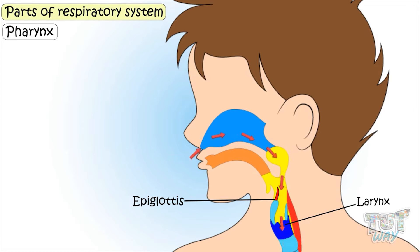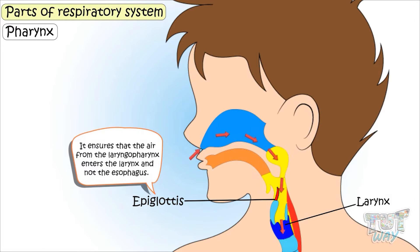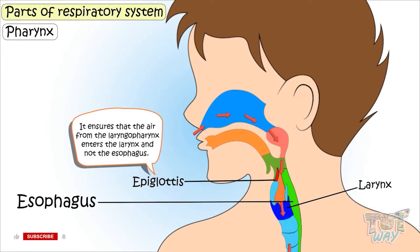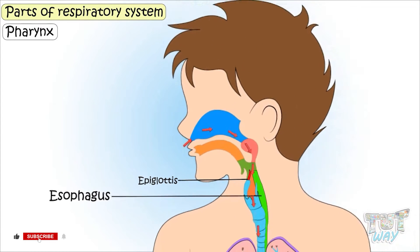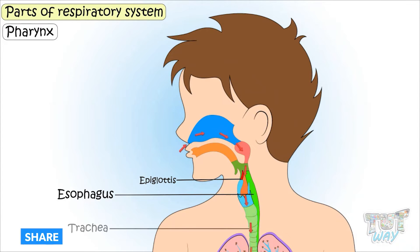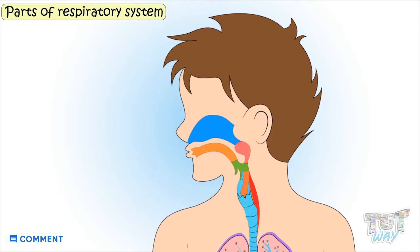The epiglottis performs a very important function. It ensures that air from the laryngopharynx enters the larynx and not the esophagus. The food we swallow enters the esophagus, and the air we breathe enters the trachea. The epiglottis is the part that ensures this.